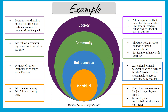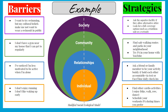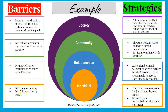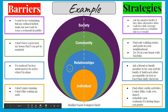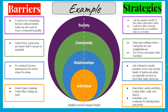An example of this activity might look like this — with barriers on the left and strategies on the right. Individually, I don't personally enjoy running and I don't like waking up early. My strategy to overcome that is I can find other cardio activities I enjoy like biking, walking, rowing, or dancing. And to overcome the barrier of not liking to wake up early, that's okay — we can schedule our workouts or physical activity during times we enjoy. In relationships, I noticed that I'm less motivated to be active when I'm alone, so I can ask a friend or family member to be my activity buddy.